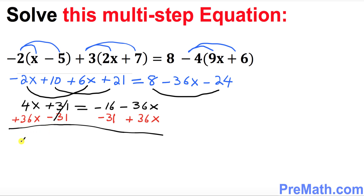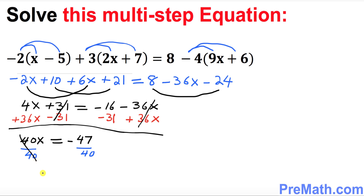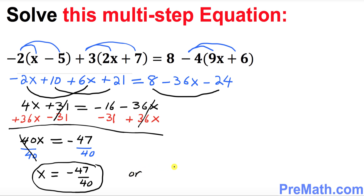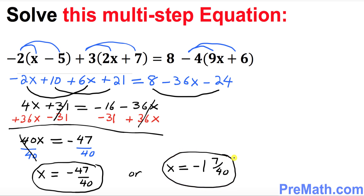We get 40X equals negative 47. Dividing both sides by 40, the 40s cancel and we get X equals negative 47 over 40. Since this fraction is improper, we can also express the solution as a mixed number: negative 1 and 7 over 40.